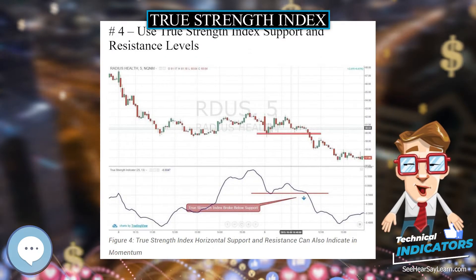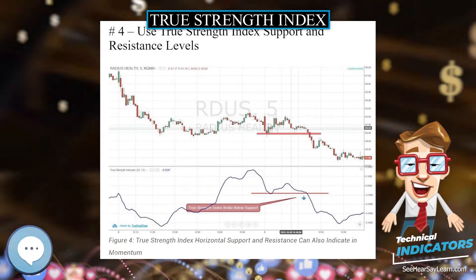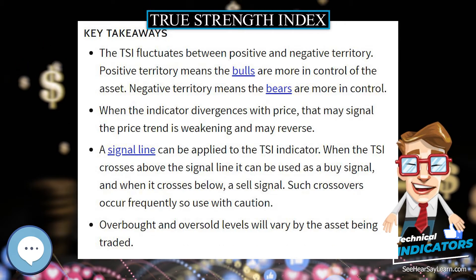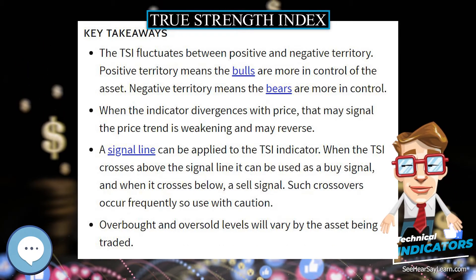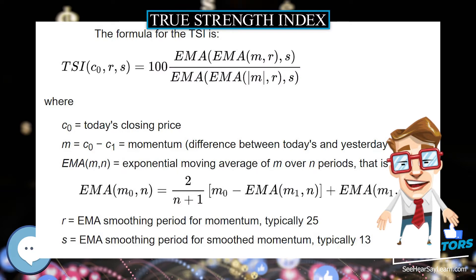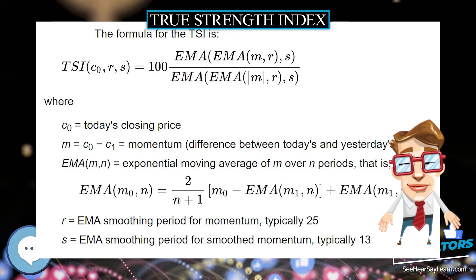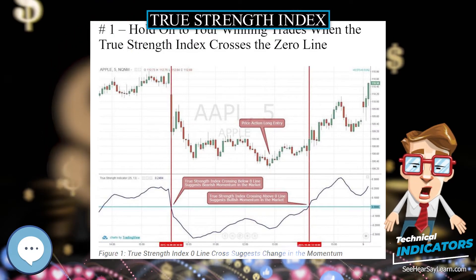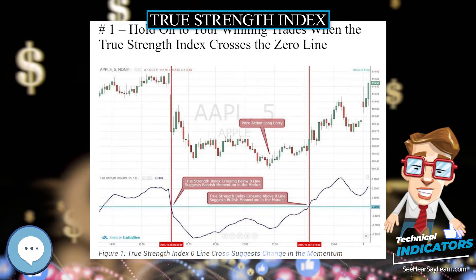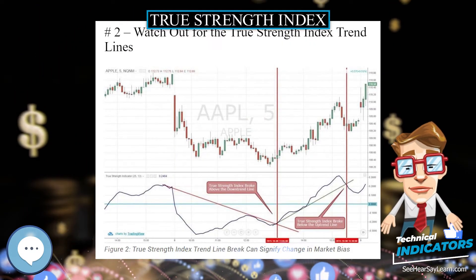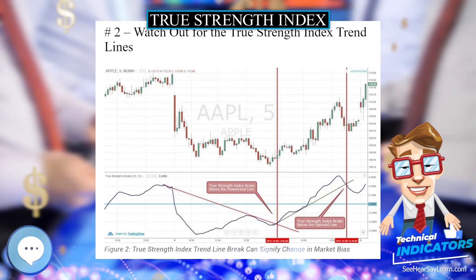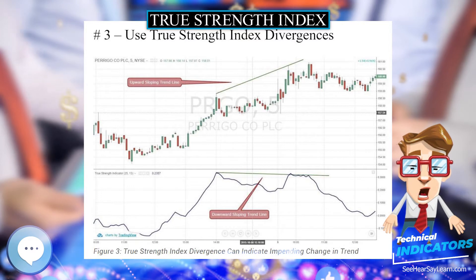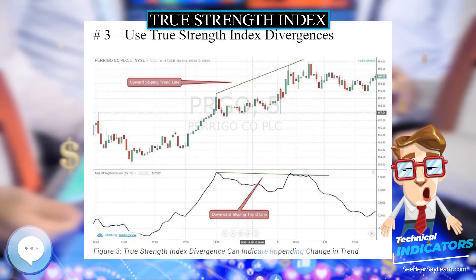The indicator uses moving averages of the underlying momentum of a financial instrument. Momentum is considered a leading indicator of price movements, and a moving average characteristically lags behind price. The TSI combines these characteristics to create an indication of price and direction more in sync with market turns than either momentum or moving average. The TSI is provided as part of the standard collection of indicators offered by various trading platforms.